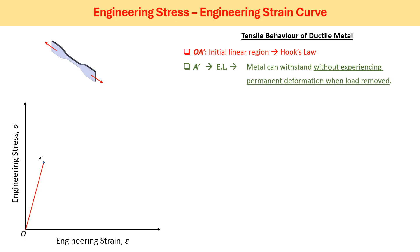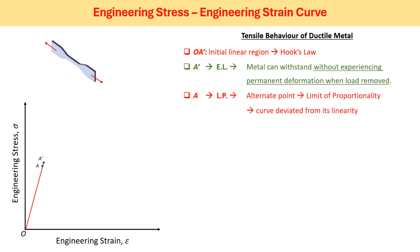What is elastic limit? This is the point where we deform the metal without experiencing permanent deformation — when we remove the load, the material retains its original shape. However, measuring the elastic limit is very difficult as it depends directly on the sensitivity of the load cell. That's why a new term has been introduced: the limit of proportionality, which is very near to but slightly below the elastic limit point A'. This is where the material's behavior deflects from linearity, and the slope of this linear curve is known as Young's modulus, which is the elastic property of the material.